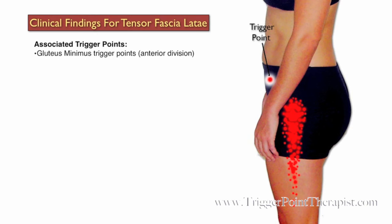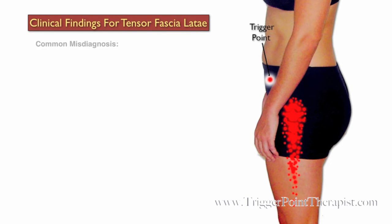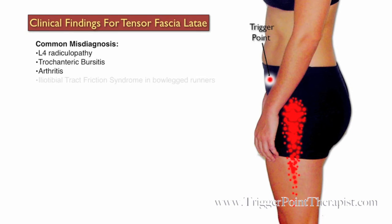Trigger points in the anterior division of the gluteus minimus are active and involved with trigger points in the TFL muscle, as well as trigger points in the rectus femoris muscle. Clients with active trigger points in the TFL are commonly misdiagnosed with L4 radiculopathy, trochanteric bursitis, arthritis of the hip, and iliotibial tract friction syndrome in bow-legged runners.